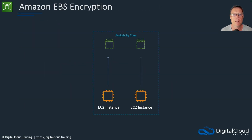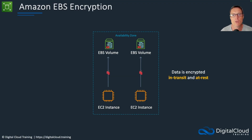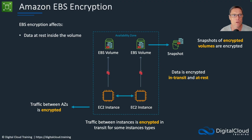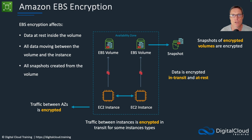Moving on to EBS — our volumes can be encrypted, meaning we can choose to encrypt data at rest within the volume. There's always SSL/TLS encryption for the transit layer because the volumes don't exist on the same hosts as the EC2 instances; they're external, attached over a network. So data is encrypted in transit as well as at rest. Snapshots of encrypted volumes are also encrypted. Traffic between instances is encrypted in transit for some instance types, and traffic between availability zones is also encrypted. EBS encryption affects data at rest inside the volume, all data moving between the volume and the instance, and all snapshots and volumes subsequently created from those snapshots.